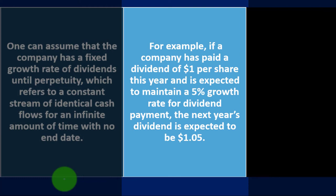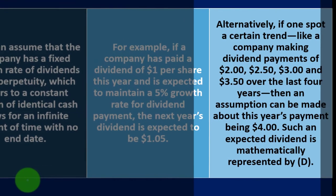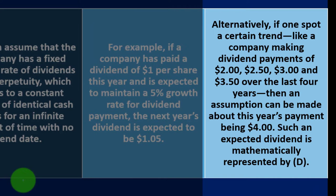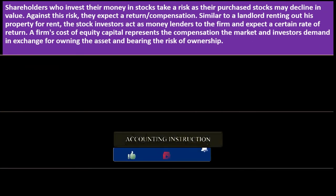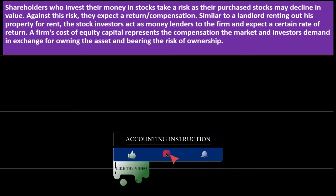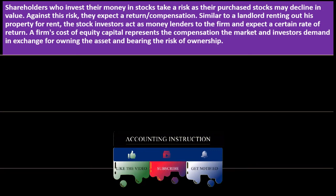For example, if a company paid a dividend of $1.00 per share this year and is expected to maintain a 5% growth rate, next year's dividend is expected to be $1.05. Alternatively, if you spot a trend — say dividends of $2.00, $2.50, $3.00, $3.50 over the last four years — you can assume this year's payment will be $4.00, continuing the trend. The expected dividend is mathematically represented by D.